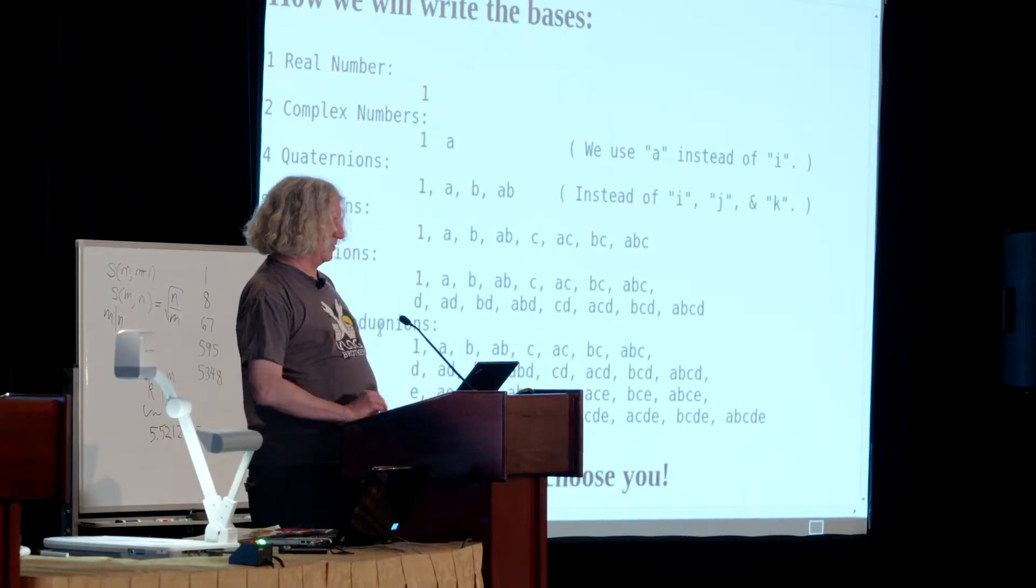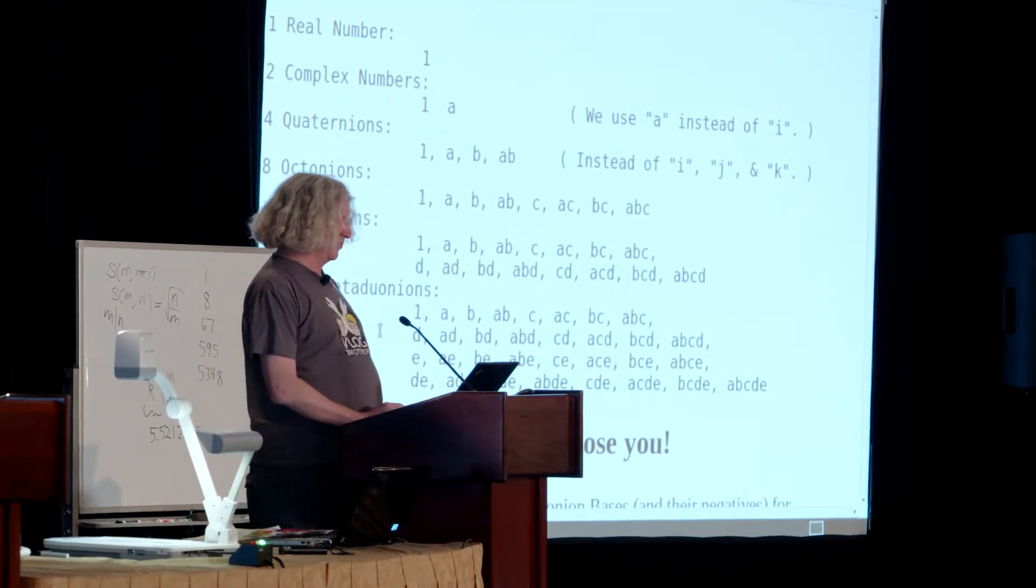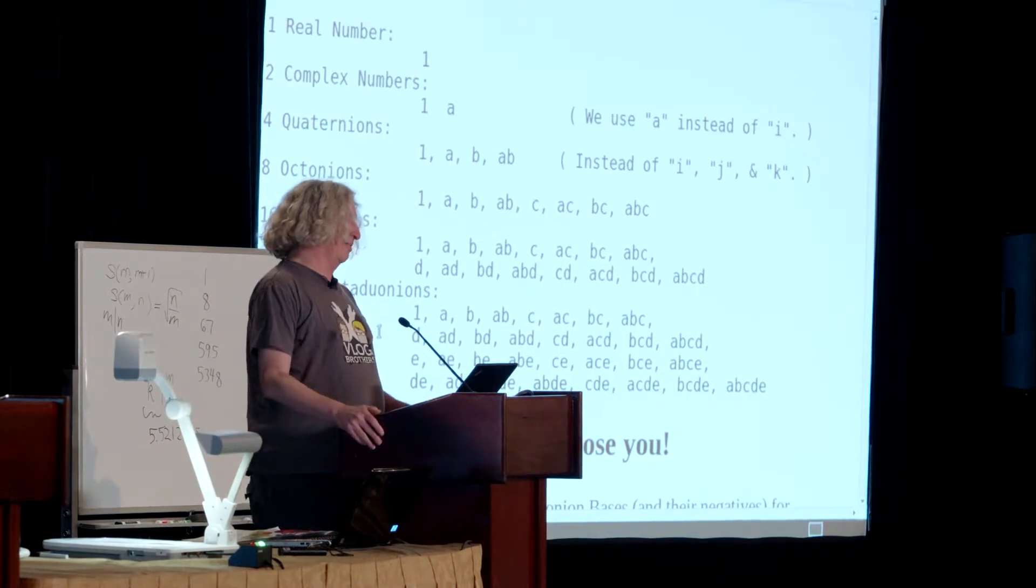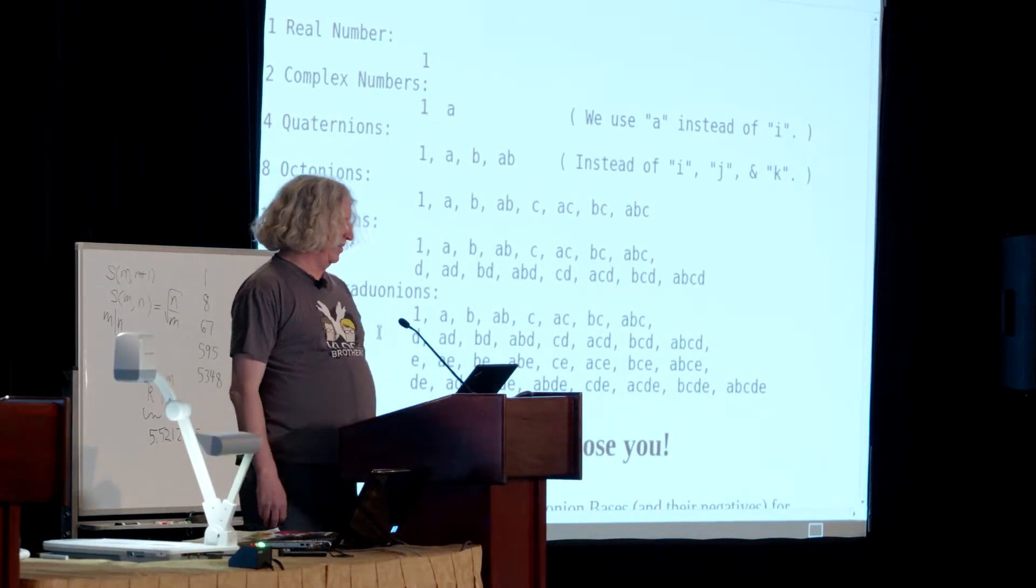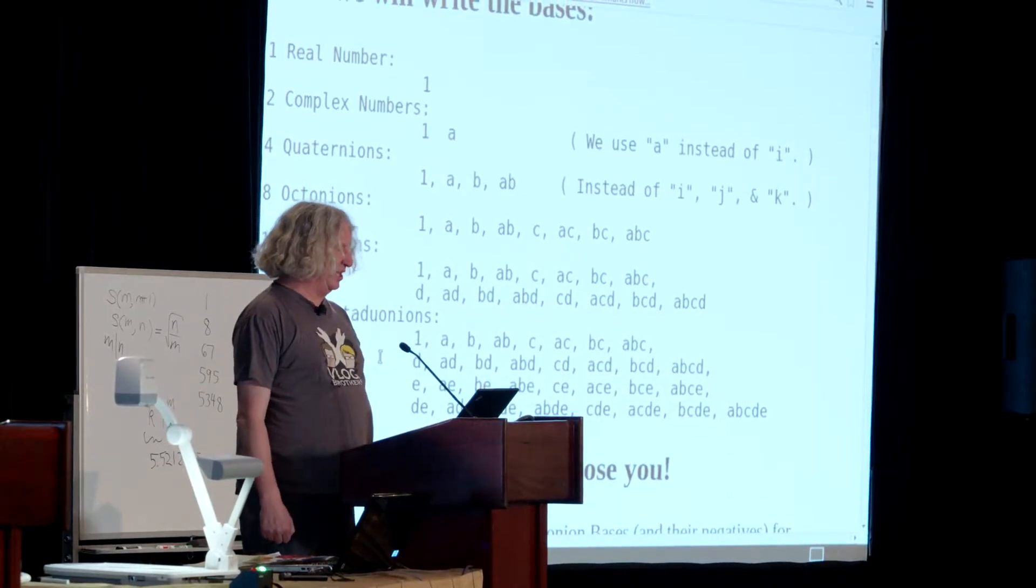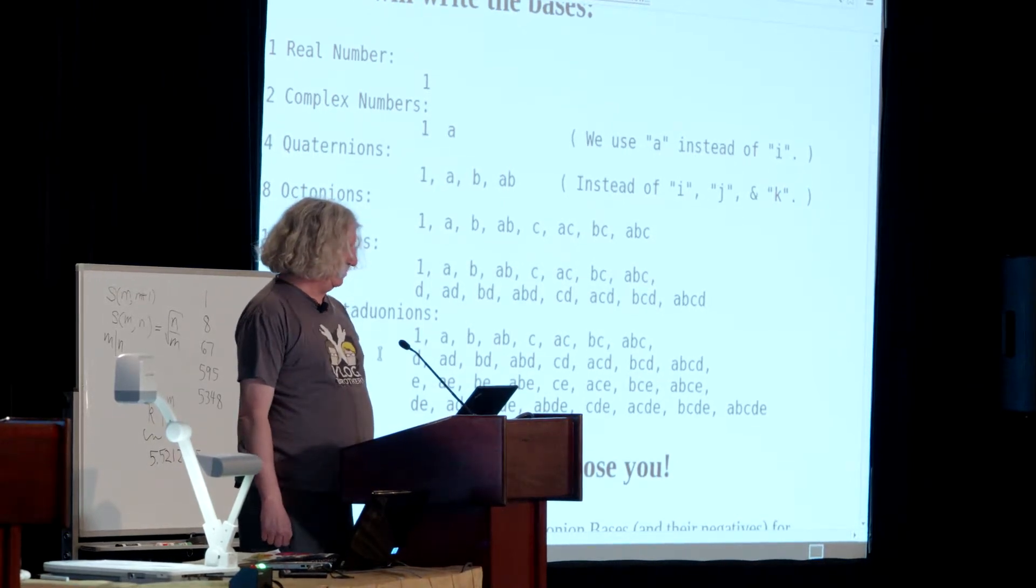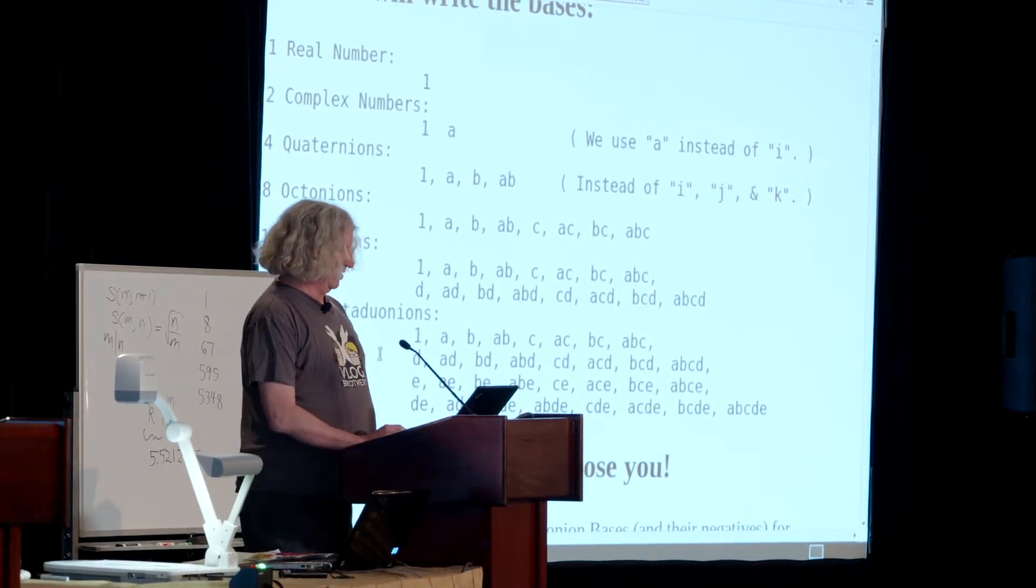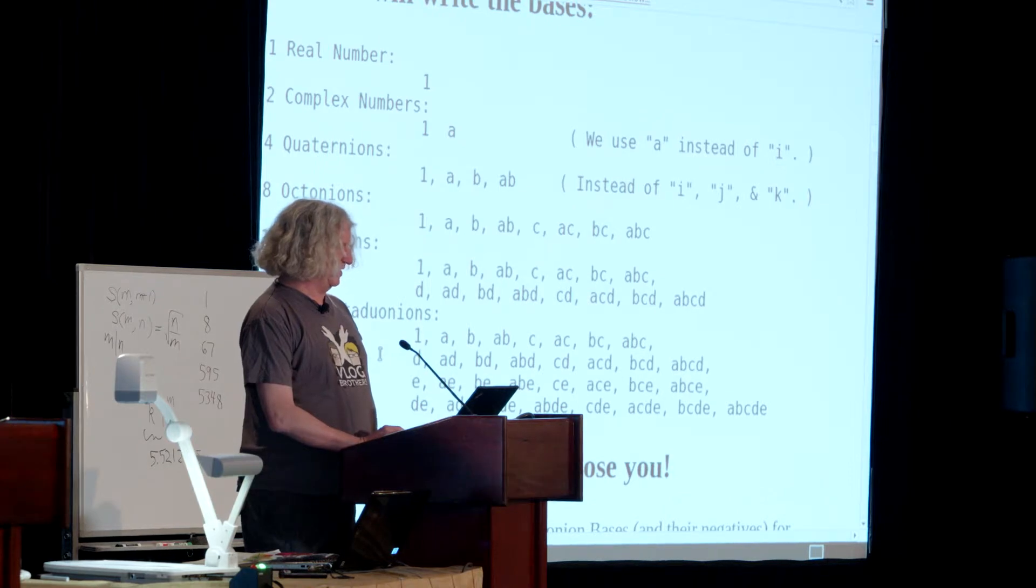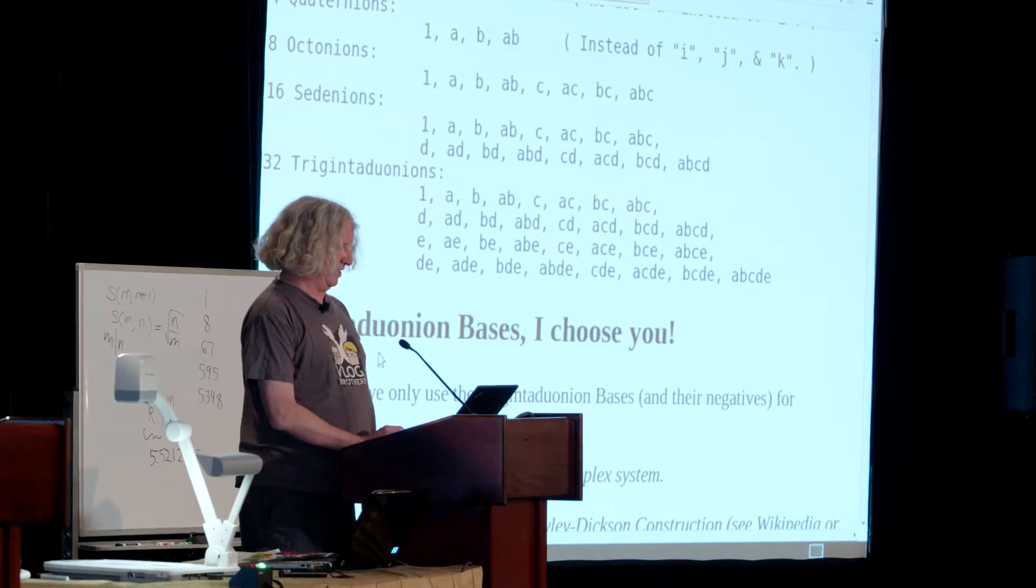In this talk, I'm writing the bases A, B, C, D, E, so the only real number in here is one. Make a duplicate of that one and add an A, and we get the complex numbers. Most people call it i, I'm calling it A. To get the Quaternions, we duplicate those and add a B. Hamilton called them i, j, and k, I'm calling them A, B, and AB. The Octonions, we duplicate and add a C. Sedenions, we duplicate and add a D, and for the Trigintaduonians, we duplicate them all and add an E.